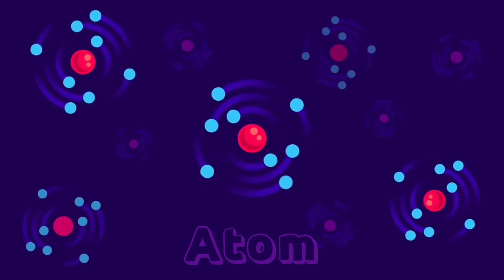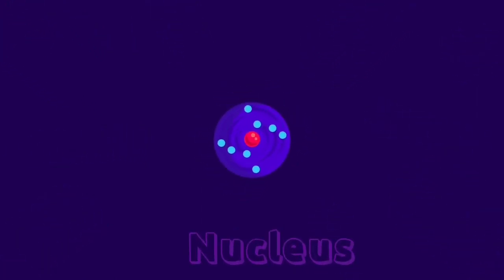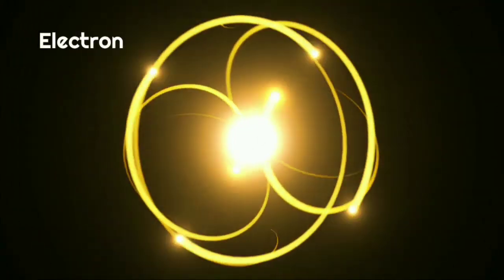Each of these building blocks consists of a positively charged nucleus made up of protons and neutrons, and negatively charged orbiting electrons.